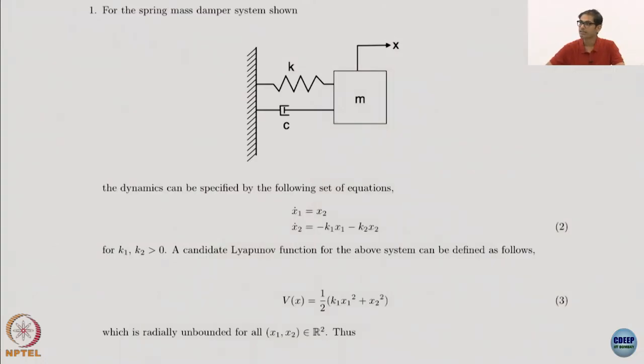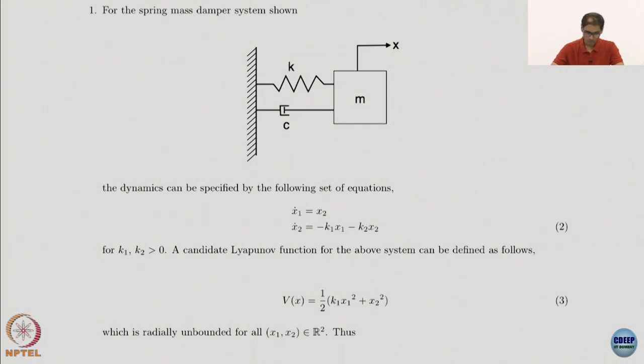I want to revisit the example because there is a small error. Let's go back and do this example again, and then I'll go back to the proof and we will go through it — it was not completed, so we'll try to finish it today. This was a spring-mass-damper example, and we were trying to use the Barbashin-Krasovsky-LaSalle theorem, which gives you stability of the zero equilibrium — the asymptotic stability result.